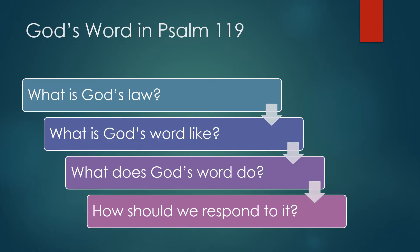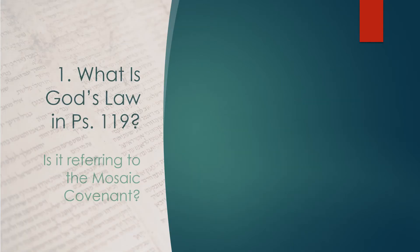These are four questions from Mark Dever when he preached at the Shepherds Conference on Psalm 119 — they overlap and one flows from the other. First, what is God's law? What is God's word like? What does it do? And how should we respond to it? To answer the first question: what does 'God's law' mean in Psalm 119? Is it really just referring to the Mosaic Covenant — all the Levitical commands about animal sacrifices? Especially from a Christian New Testament perspective, these words can seem a bit alien.